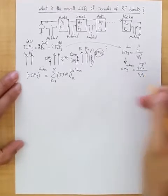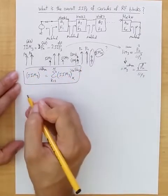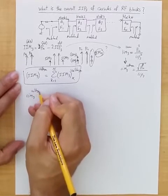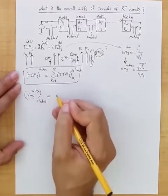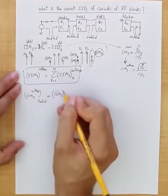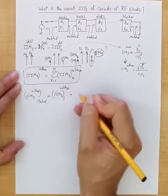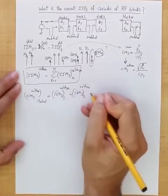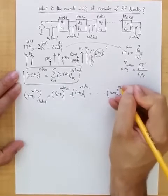Alright, we're going to apply this to two sides of the equation here. So the overall IIM3 in voltage total is equal to IIM3 of block 1, in voltage, plus IIM3 of block 2 voltage, plus IIM3 of block N voltage.